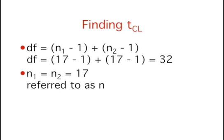Something you may have noticed about this example is that N1 equals N2 equals 17. When N1 equals N2, it is conventional to use N to refer to the sample size of each group.